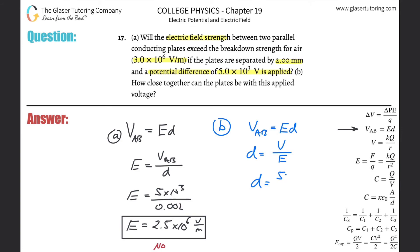So there's the same voltage, 5.0 times 10 to the 3rd, all then divided by the electric field strength, which will be the breakdown strength of air, 3 times 10 to the 6th.